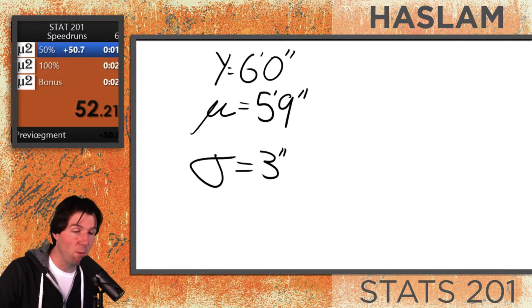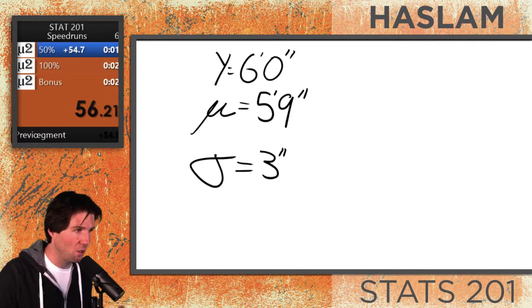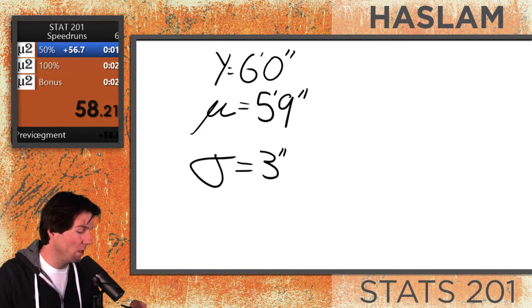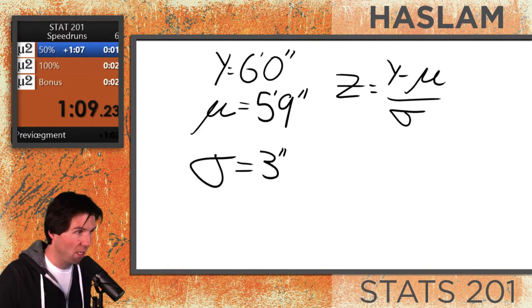Now we could draw this out, which we will in a moment here. But we're going to first find the z-score of a gentleman who is six feet tall. The formula for a z-score is that z equals the observation minus the mean over the standard deviation.